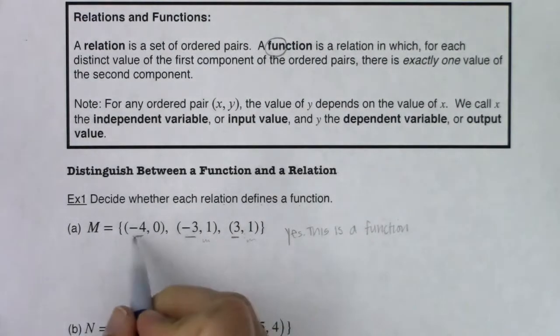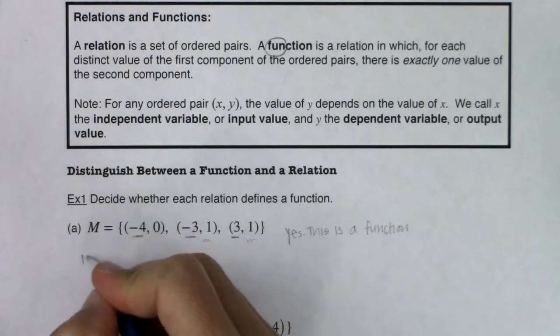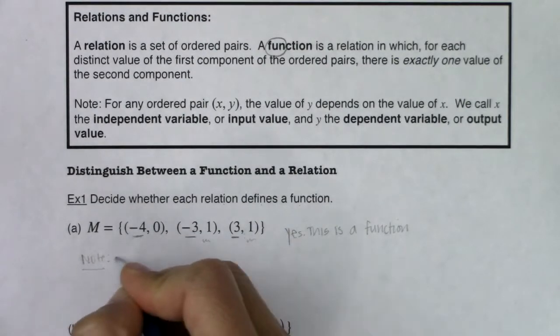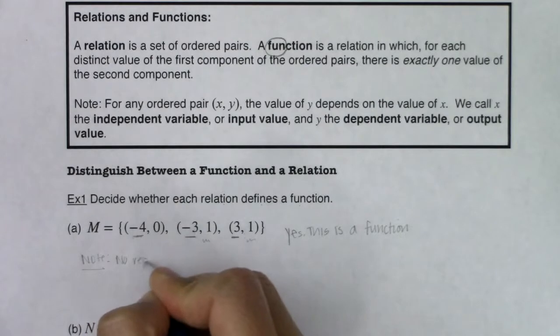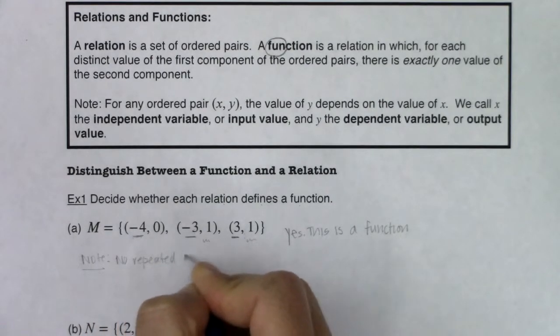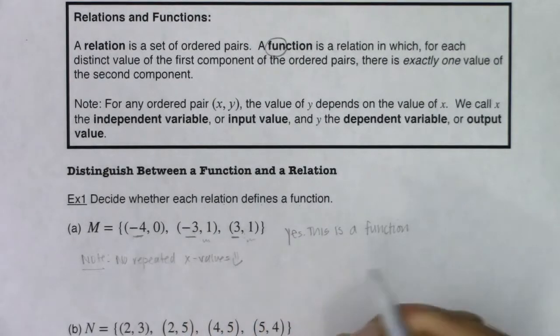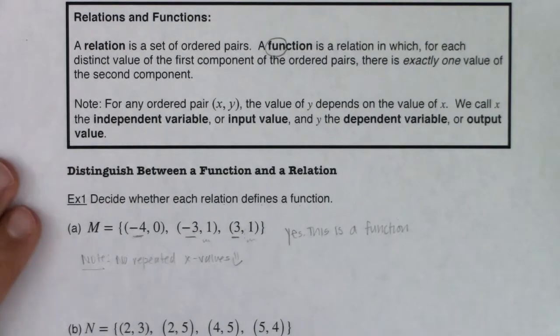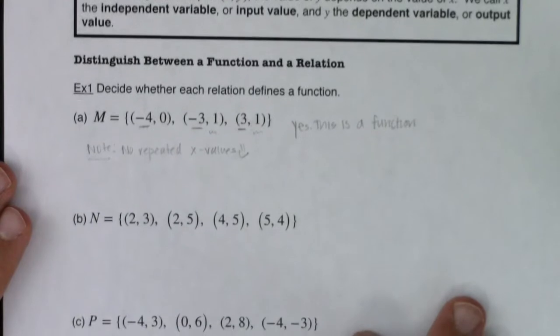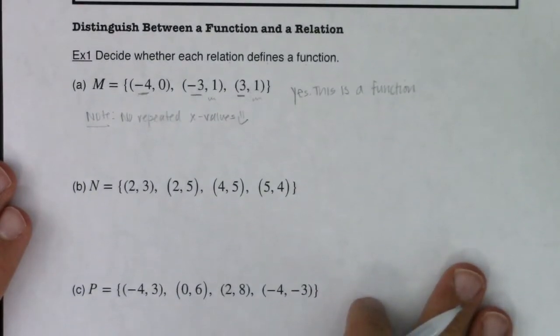And again, I would just take note, there were no repeated X values. And I'm going to put a little happy face because that's a pretty good clue that we have a function. This is just when we have a list of ordered pairs. When we start graphing things, and we could graph these if we want, but when we start graphing relations, we'll have a different metric. Let's scooch the page up so we can see the remaining two examples.